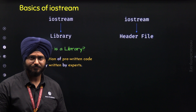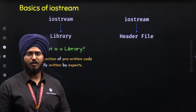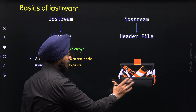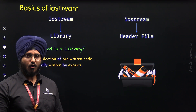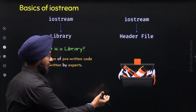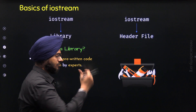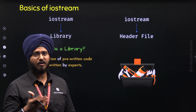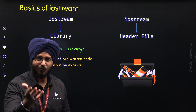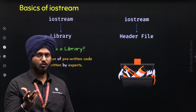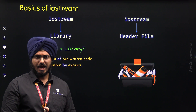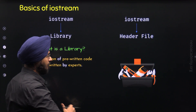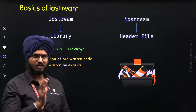Think of a library as a toolbox, which is a collection of various tools. If we want, we can use a tool directly — there is no need to reinvent the wheel or build these tools from scratch. For example, if we want to use a hammer, we can directly use it for a specific purpose without building it from scratch. So a hammer could be thought of as pre-written code, and the library is the toolbox which has all the pre-written code for performing some operations.